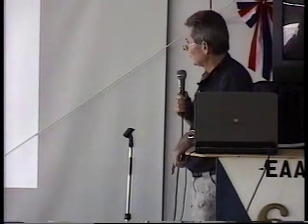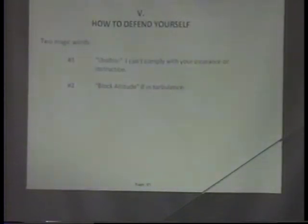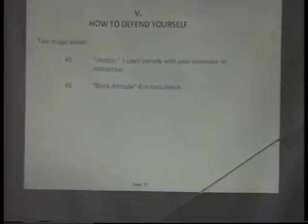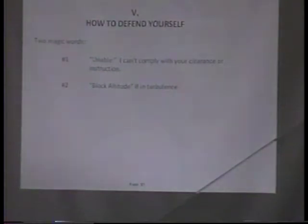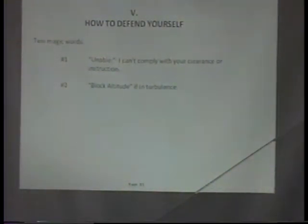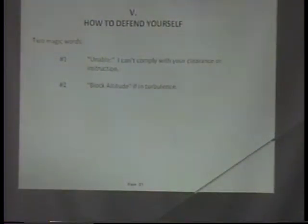Two really good words: 'unable' and 'block altitude.' I was given a clearance one night where ATC said: descend from 5,000 to 3,000, reduce airspeed to 120 knots. I said, partner, I can go down or I can slow down, but I can't do both at the same time — which do you want? If you can't do it, just say 'unable' and let them make other arrangements.